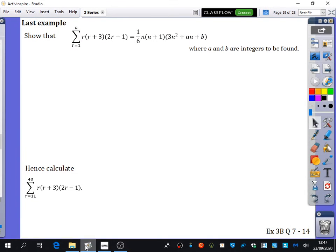So we are going to have a look at this last example, where we're going to do a show that question. It wants us to find out what this is equal to, and it says that a and b are integers to be found. So we need to make sure we can go in that form that we've got there. What do you think we need to do for the left-hand side of this equation? We're going to have to expand it, so that's the first thing we're going to have to do on the left-hand side here.